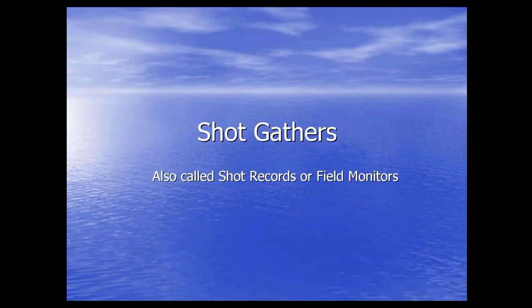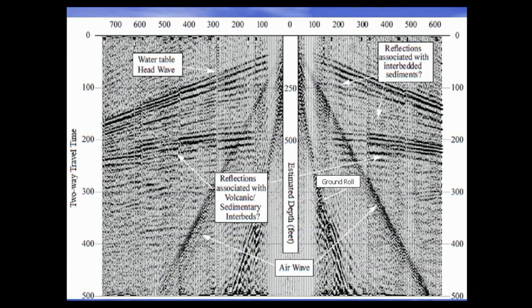Now we move on to shot gather data, also called the shot record or field monitor data. I will show you some examples of shot gather data recorded in the field so you can experience what the data looks like. In the first example, you can see a lot of noise: refractions, reflections, head waves, ground rolls, and air waves. Ground rolls and air waves are normally noise, but these prominent reflections are from interbedded sediment. The water table or head waves and one sharp reflection can be associated with volcanic-sedimentary interbedded rocks.